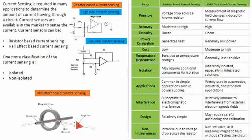In terms of accuracy, Hall effect sensing has much higher accuracy compared to resistor-based current sensing, where resistor tolerances and corresponding circuit tolerances reduce accuracy. Resistor-based sensing offers moderate to high accuracy, while Hall effect is high. Linearity-wise, both are linear. Regarding power dissipation, the biggest problem with resistor-based sensing is power dissipated across the sensor resistor, which becomes a major issue as we go to high current applications.